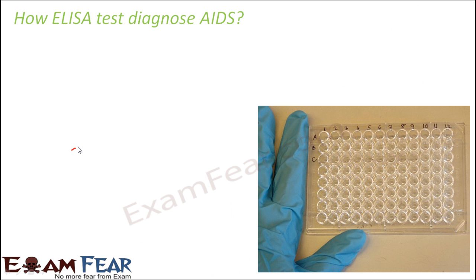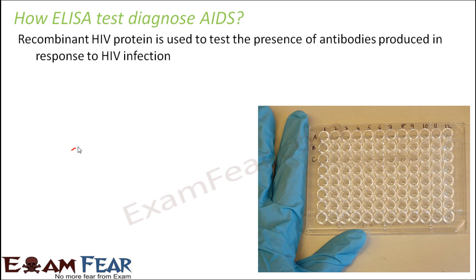Now that we understand antigen-antibody interaction, let us understand how exactly this test helps diagnose AIDS. Recombinant HIV protein is used to test for the presence of antibodies produced in the body in response to HIV infection. As soon as HIV virus enters our body, it acts as an antigen, and our immune system produces antibodies in response. So if HIV is present inside the body, the antibodies against the virus should also be present. In this test, we detect the presence of those antibodies using recombinant HIV protein.